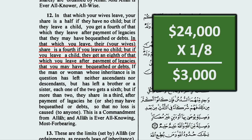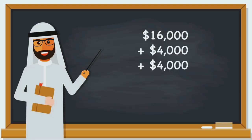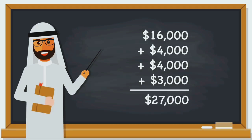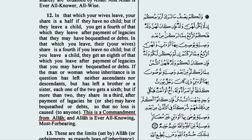Now let's put all of this together. The daughters receive $16,000, the mother receives $4,000, the father receives $4,000, and the wife receives $3,000. $16,000 plus $4,000 plus $4,000 plus $3,000 gives us a total of $27,000. If you recall that the man died leaving an inheritance of $24,000, we can conclude that, according to Allah, $24,000 equals $27,000. Dividing the $24,000 inheritance in this way is a commandment from Allah. As a Muslim, you're commanded to magically transform $24,000 into $27,000. Let me know how that works out for you.